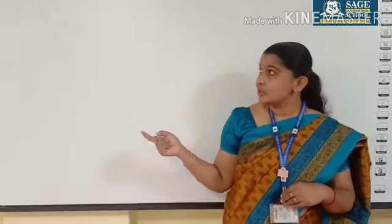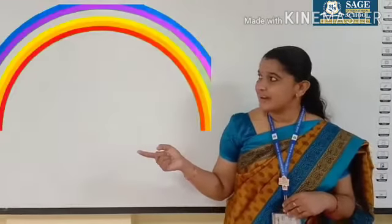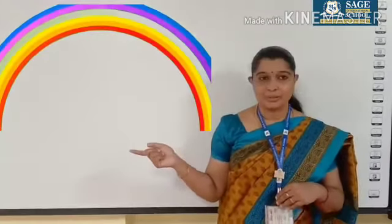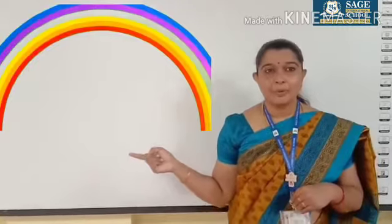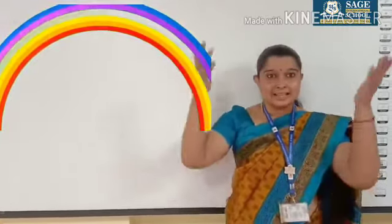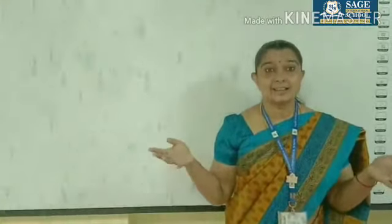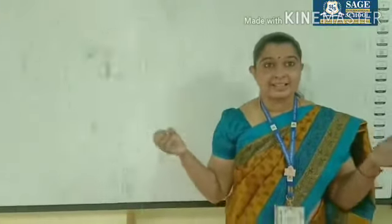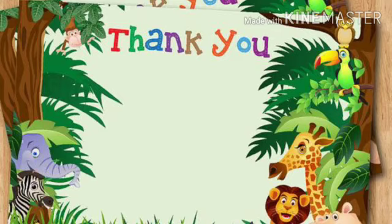And see this. What is this? This is a rainbow. And see this — what is this? This is rain.